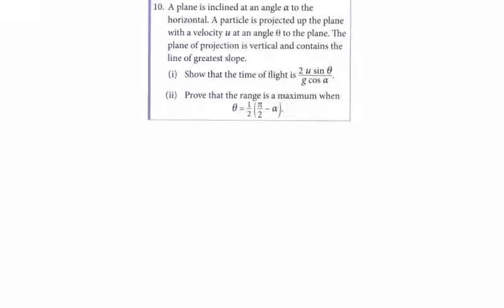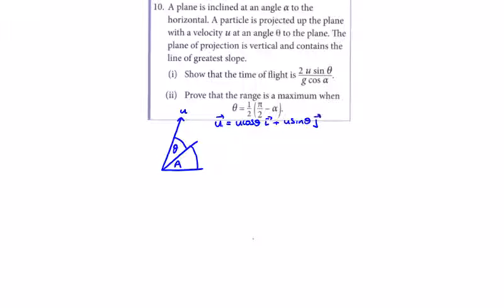Question 10: a plane inclined at an angle alpha to the horizontal. A projectile is fired at a speed u at an angle theta to the inclined plane. The initial velocity vector is u cos theta in the i direction plus u sin theta in the j direction. The accelerations are minus g sin alpha in the i direction and minus g cos alpha in the j direction.